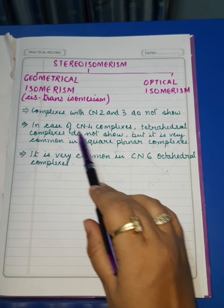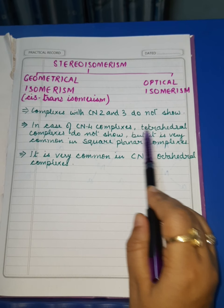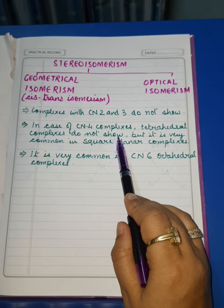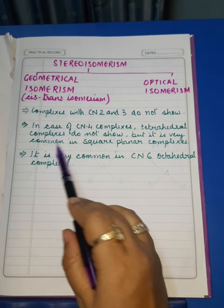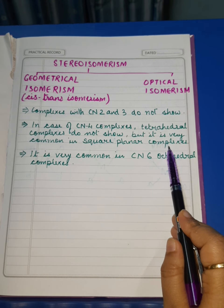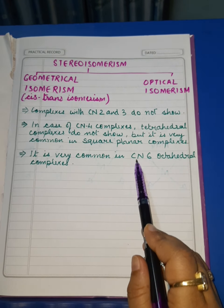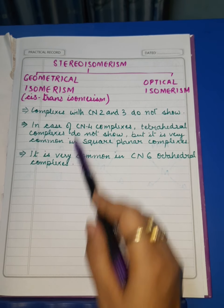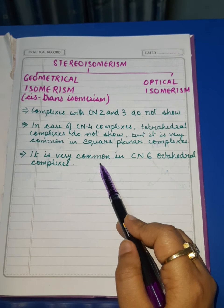In case of coordination number 4 complexes, tetrahedral complexes do not show geometrical isomerism, but it is very common in square planar complexes. And in case of coordination number 6, octahedral complexes, geometrical isomerism is very common.